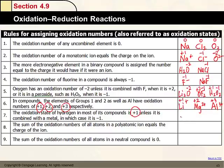Hydrogen is typically +1, like in HCl where hydrogen is +1 and chlorine is -1. If hydrogen is bonded to a metal, like in nickel hydride, hydrogen is -1 and nickel would be +1.